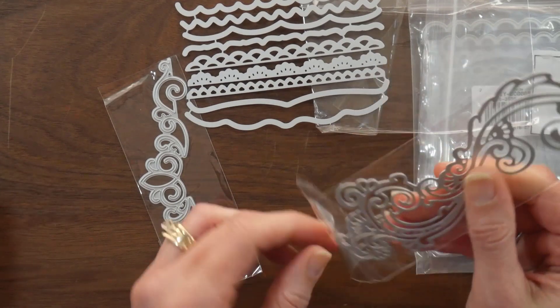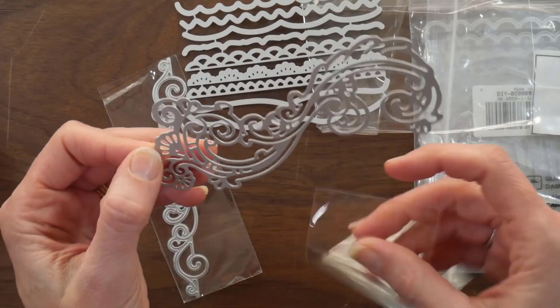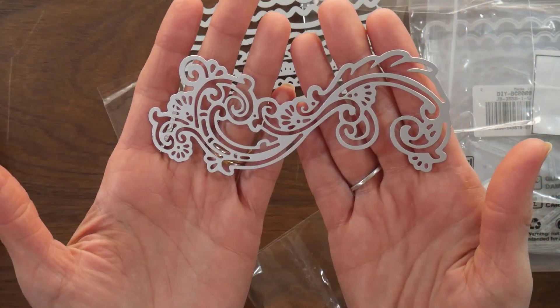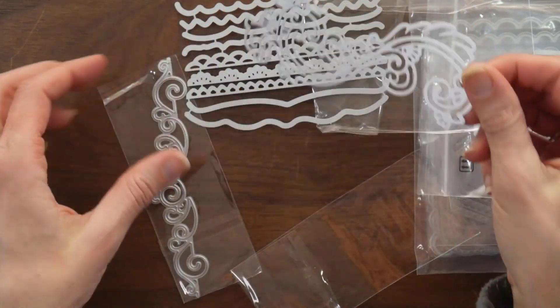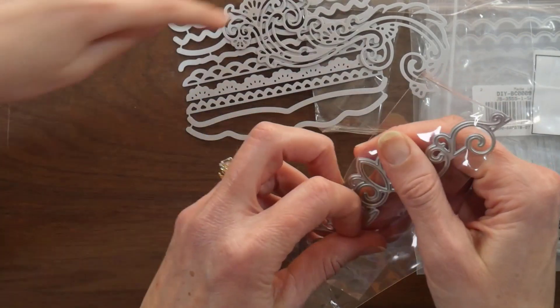And then here's like a scroll one, which looks really pretty. It also looks like waves. It does look like waves. Oh, here's your crown, and a dolphin.